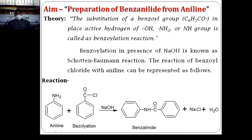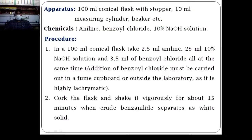This reaction is known as the Schotten-Baumann reaction. In this reaction, benzoyl chloride reacts with aniline in the presence of NaOH — that means aniline undergoes benzoylation in alkaline medium to form benzoanilide, NaCl, and water as by-products.